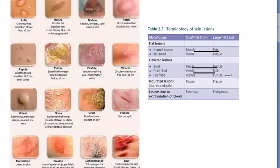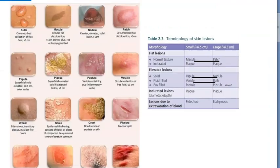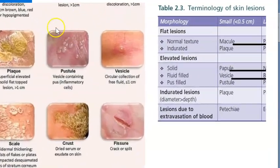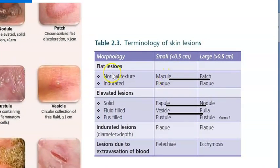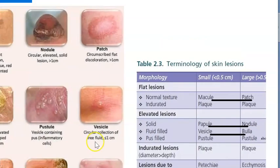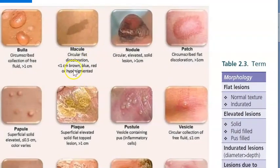Look at this. Basically, macule means it will be flat. So macule is any flat lesion. Macule, if it is large, will become patch. Elevated lesions are papule, nodule, vesicle, bulla, like that. So macule is a flat lesion which is very small. They have shown that here — macule.